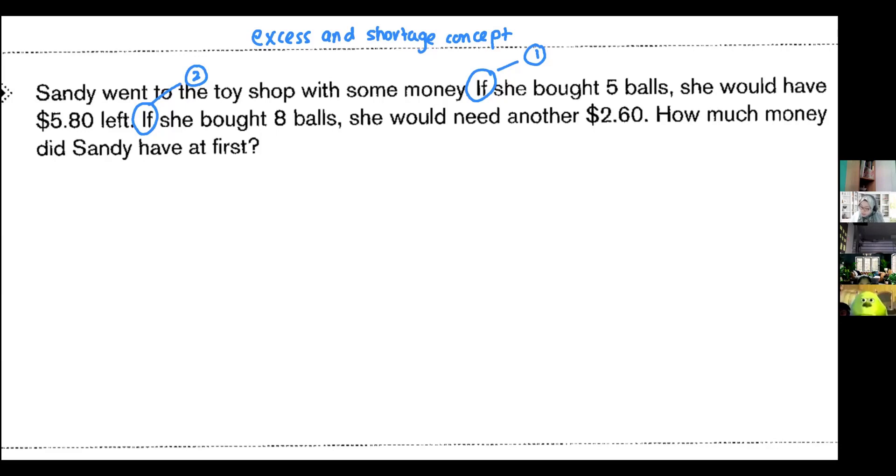Let's look at the first if sentence. If she bought five balls, she would have $5.80 left. Can you see the word left there? The word left tells me that this is in excess. It means there's a lot more extra. She have extra money of $5.80. So if it is excess, then we will put it as plus since she got extra money.